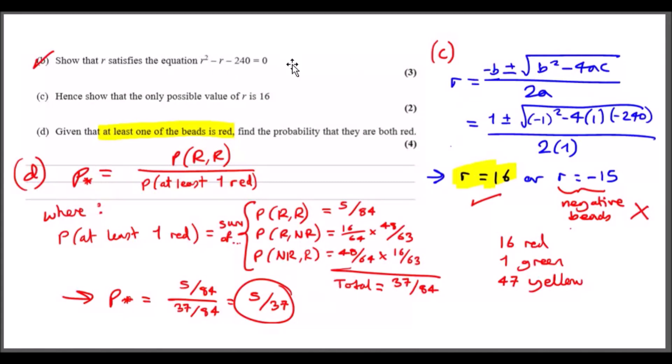In this case, the coefficient of r squared is 1, so a is 1, b is minus 1, and c is minus 240. Just plug into the formula like here, and doing it carefully, you should get r equals 16, which is true—we got that, we've done it, we showed it—or r equals minus 15.